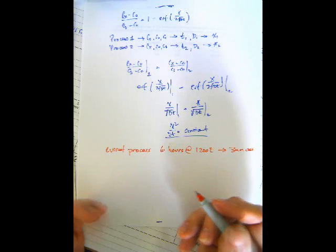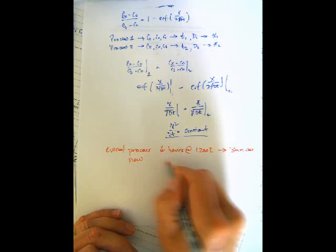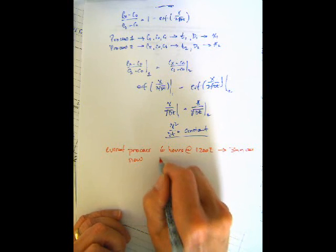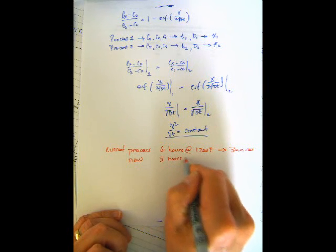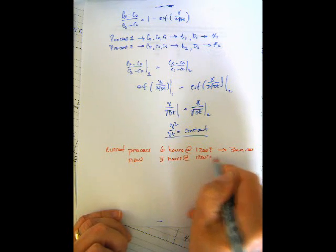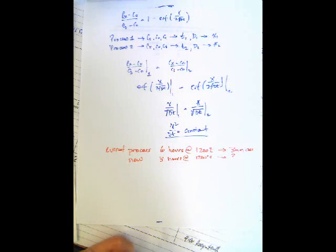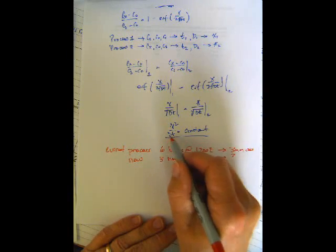Now, let's say we alter the process. In the new process, what we want to do is we're going to do 3 hours at 1200 degrees C, and the question is, what's my case? What's that going to do to the depth of our final product? So, we go to this equation.